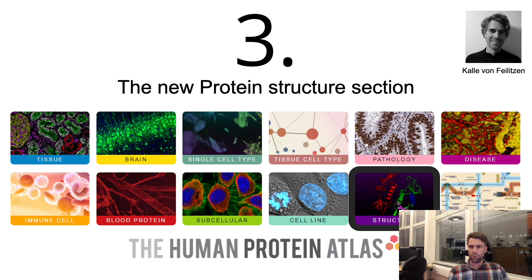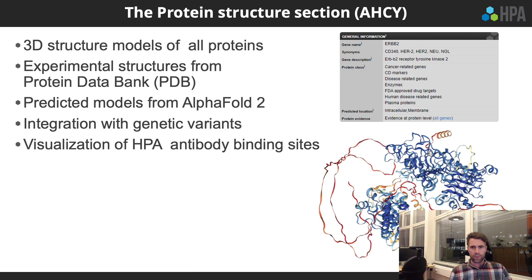Kalle von Fehlitsen, head of informatics and data handling in the Human Protein Atlas project, presents the new protein structure section in HPA version 22. Within this section, 3D structure models of all proteins are shown — experimental structures from the Protein Data Bank and predicted models from AlphaFold2. Genetic variants, both clinical and population variants, are integrated, and HPA antibody binding sites are visualized by mapping antigens into these protein structures.